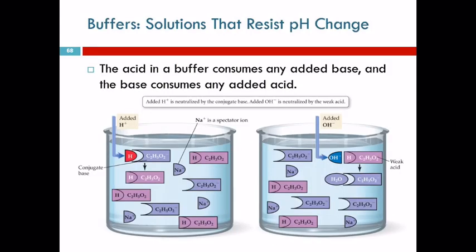Maybe pictures will help. The buffer contains the weak acid and the conjugate base. It can have both because it's a weak acid. The weak acid only partly ionizes, so part of it ionizes and you've got this conjugate base there, the ion, and then part of it doesn't ionize—that's the weak acid.